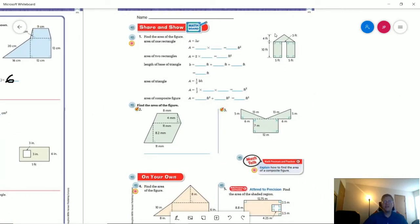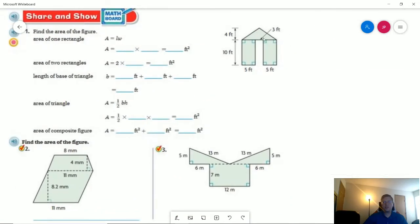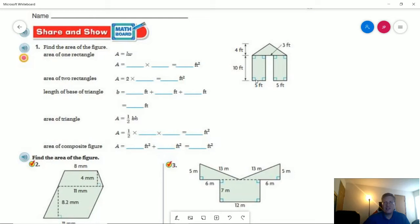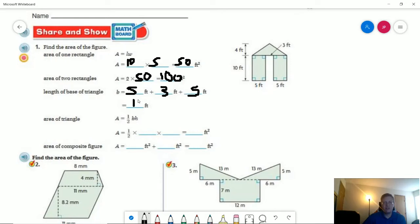So let's take a look at our Share and Show. So we have something similar to what we worked on. The only difference being we don't have a square on the top. So the other one, this particular part here, was a square. And then there were two triangles that met it. And it kind of made a flat roof instead of a triangular roof. So we are going to start with the area of one rectangle. We are going to have 10 by 5. So 10 times 5 is going to give us 50. We are going to do 2 times 50, which is 100. And then the length of the base of the triangle is going to be the length of this section plus 3 plus this section, which is going to give us 5 plus 3 in the middle plus 5, which would give us 13.